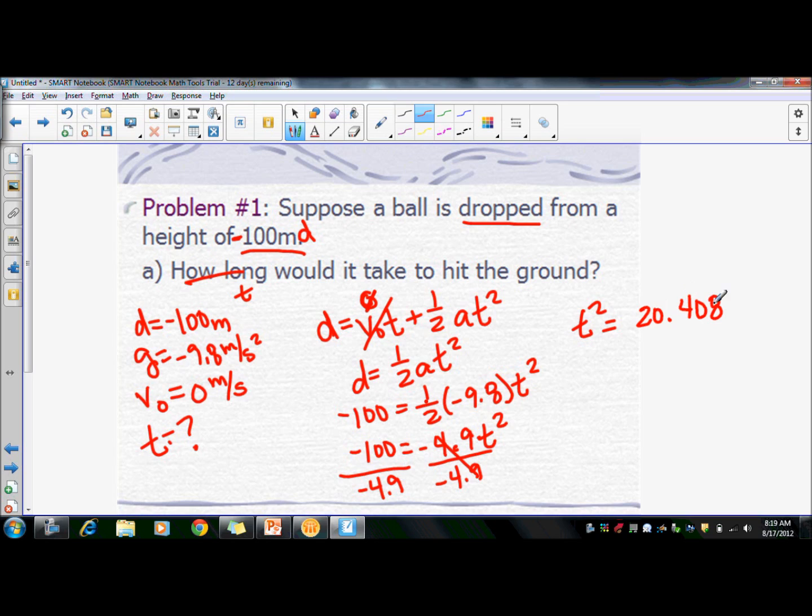And we're going to get a t squared value of 20.408. Now make sure you don't round too much. If you round too much, especially on WebAssign, it's going to count it wrong. Whenever you're working a problem, use at least five digits, at least five significant digits.